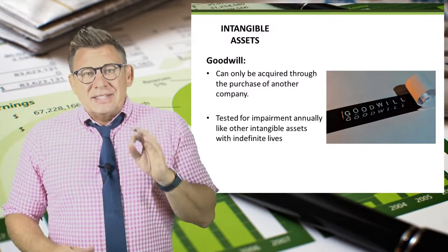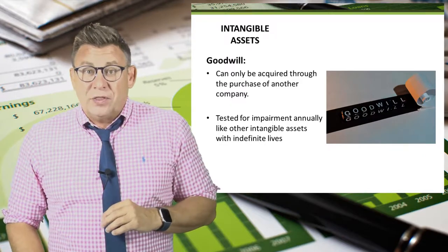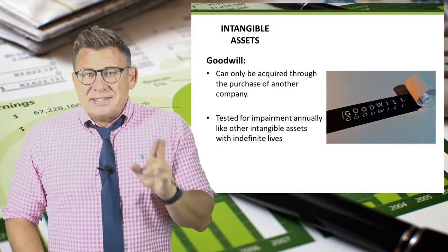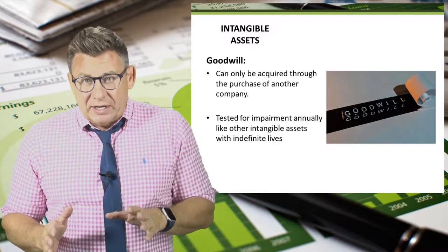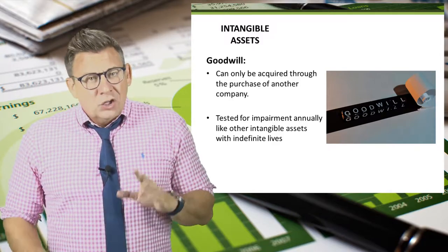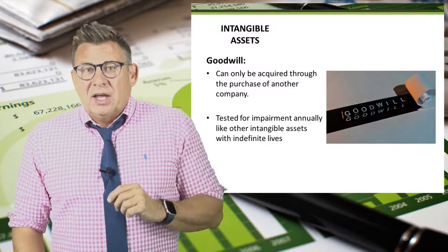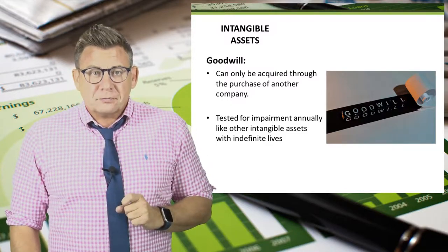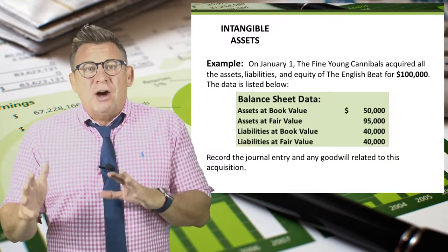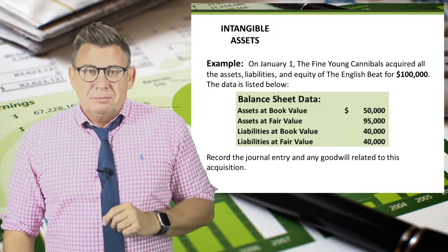Goodwill is tested for impairment like other intangible assets with indefinite lives. However, the test is different and more complicated than the other impairment tests. Usually, goodwill impairment is an intermediate accounting topic, and I will not cover that here. So let's look at an example to learn how to calculate goodwill and how to record it in a journal entry.